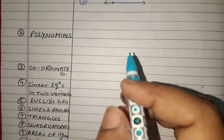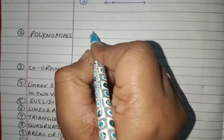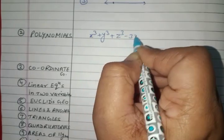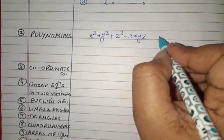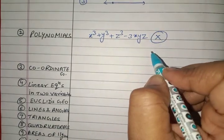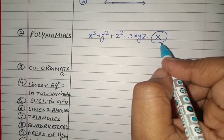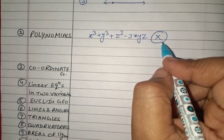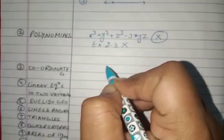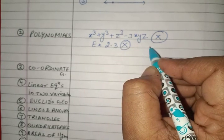In Polynomials, they have removed the identity x³ + y³ + z³ and questions based on this identity — no need to do this identity. The second deletion is the statement and motivating examples of the Remainder Theorem, meaning Exercise 2.3 is also deleted.